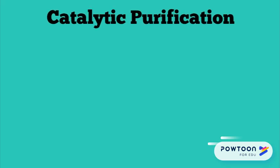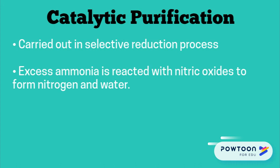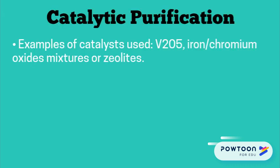On the other hand, in the catalytic purification method, the nitric oxide produced is reacted with excess ammonia to form nitrogen and water. For this purpose, catalysts are used. Examples of catalysts used include vanadium pentoxide, iron-chromium oxide mixture, or zeolites.